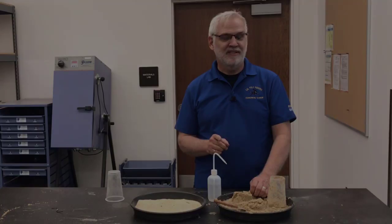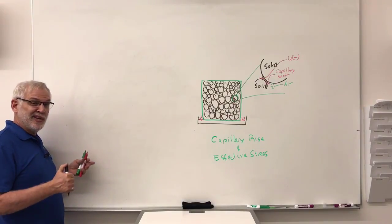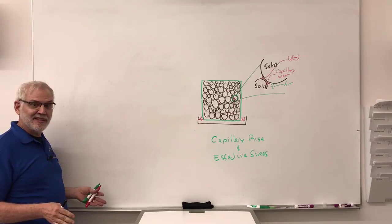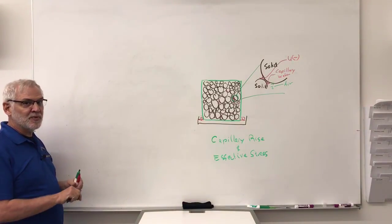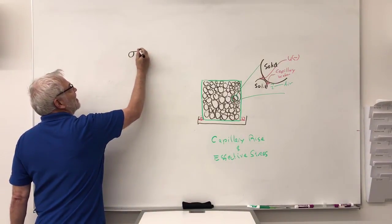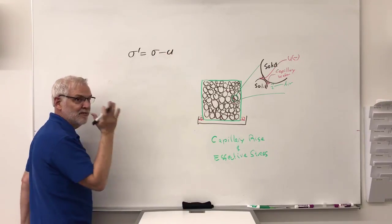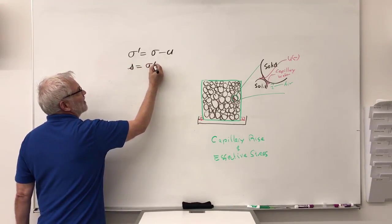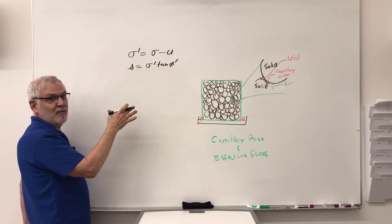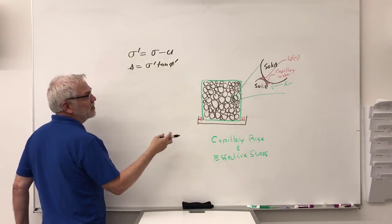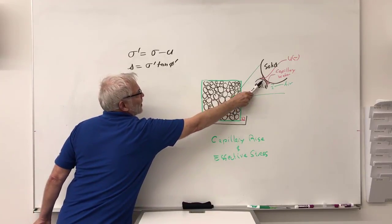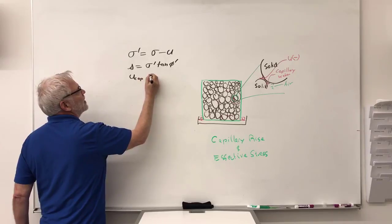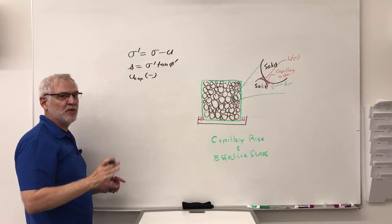Let's go to the board to explain this. We can explain why a dry sandcastle doesn't work at all, a moist sandcastle works great, but a saturated sandcastle doesn't work any better than a dry one — using three simple concepts. First: effective stress equals total stress minus pore pressure — the most important equation in soil mechanics. Second: the strength of a sand equals effective stress times tangent of the friction angle, as we learned from our sand test. Third: within capillary water, because a meniscus forms and creates surface tension, the capillary pore pressure is negative.